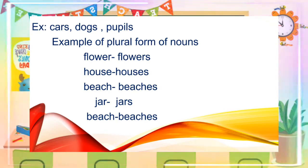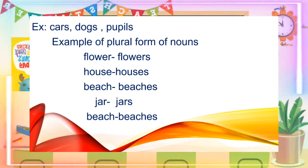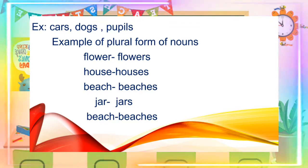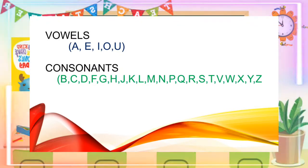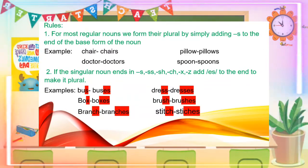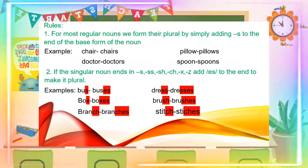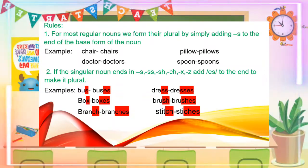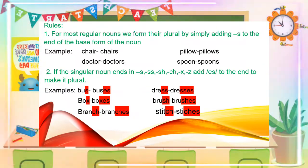Examples of forming the plural form of a noun: flower, flowers; house, houses; beach, beaches; jar, jars. Let us also remember that the vowels in our alphabet are A, E, I, O, U, and the rest of the alphabet are the consonant letters. In forming the plural form of regular nouns, we have some rules to remember. Rule number one: for most regular nouns, we form their plural by simply adding S to the end of the base word. For example: chair, chairs; doctor, doctors; pillow, pillows; spoon, spoons.